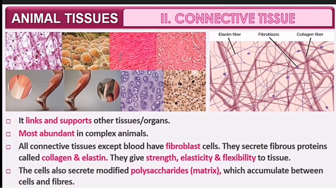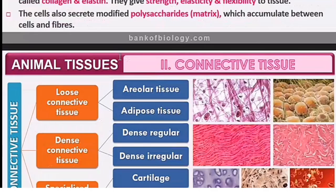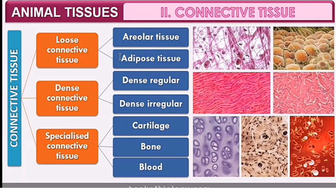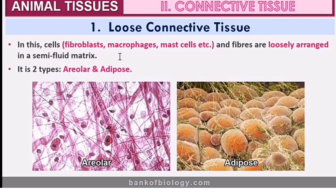Now, connective tissues — what are these? They are fiber-like structures that provide support to the body. Connective tissues contain fibroblast cells, which produce collagen and elastin proteins. These proteins are elastic and give flexibility to the tissues.